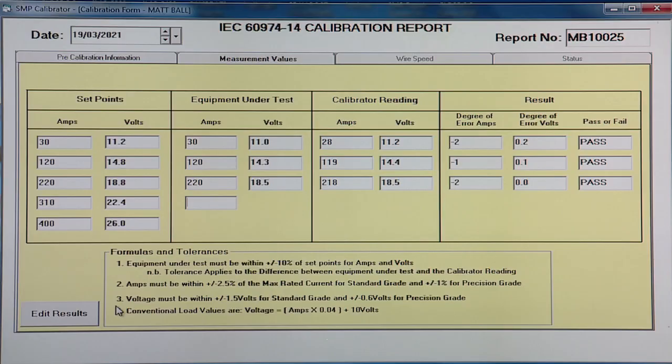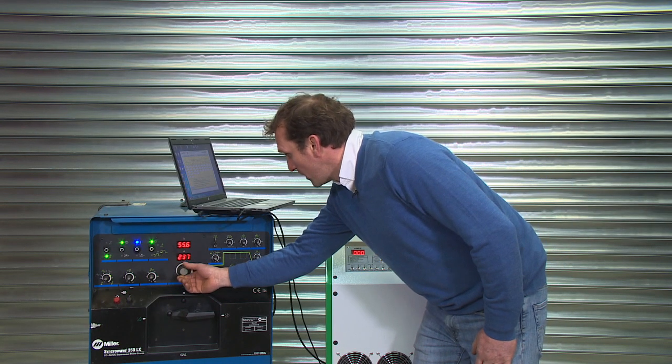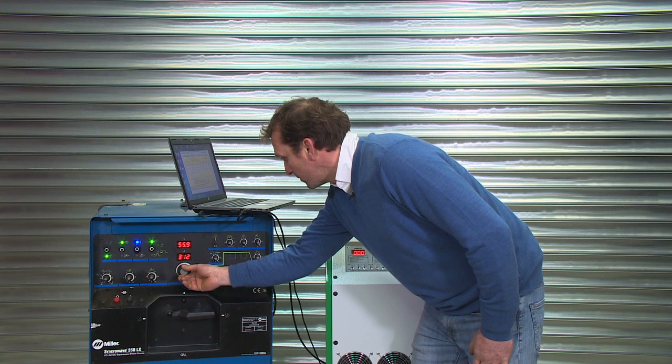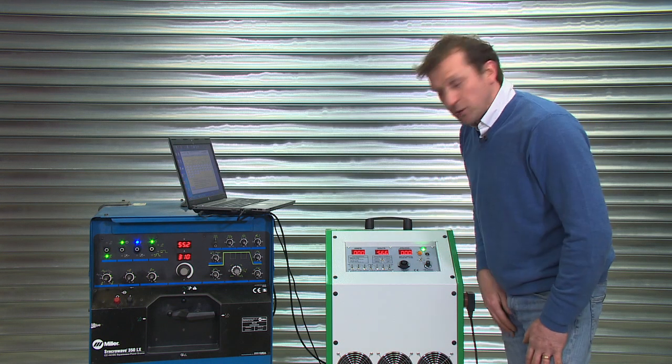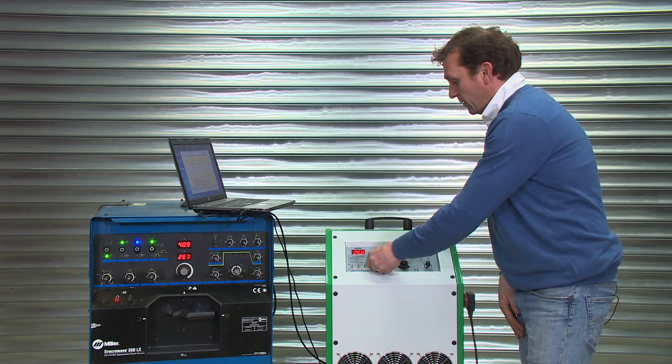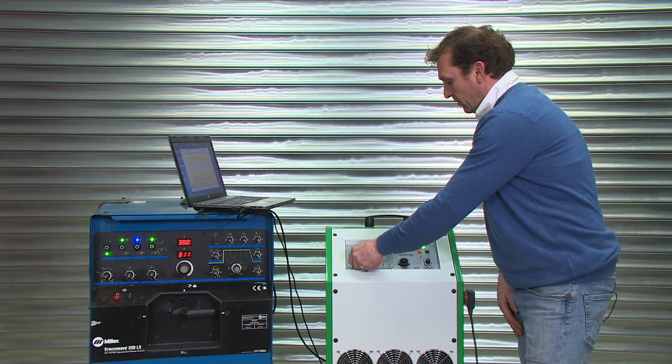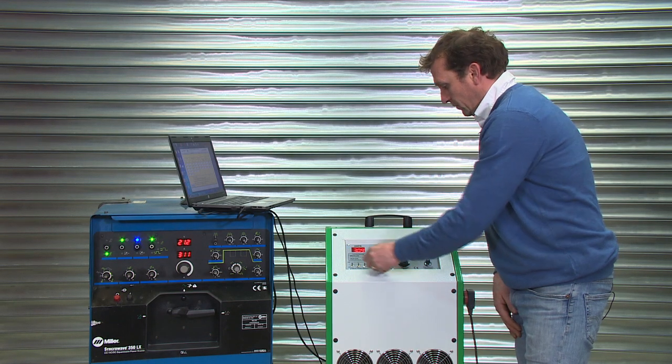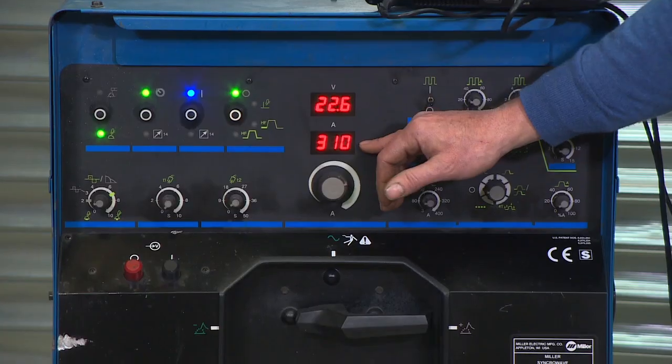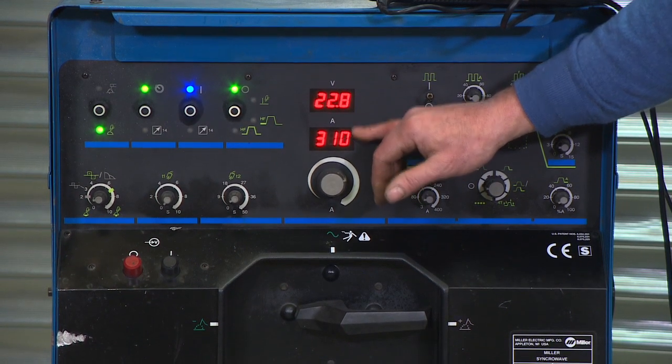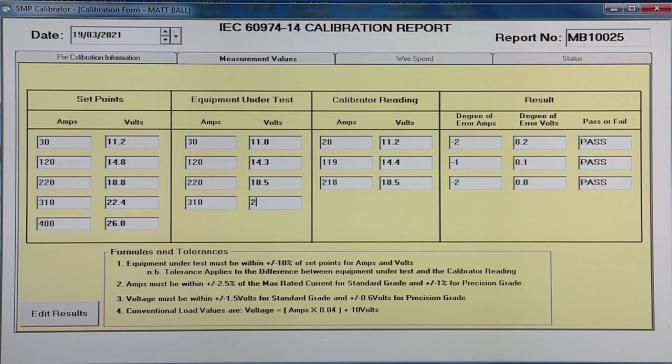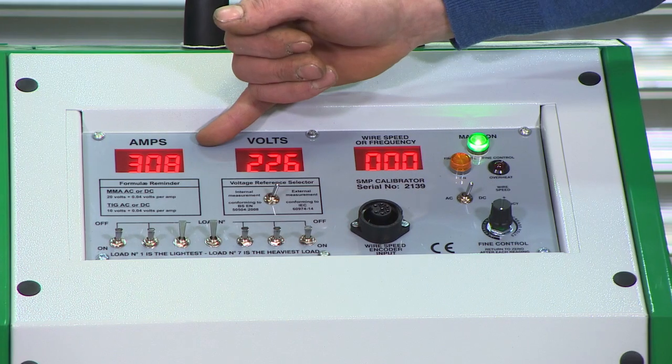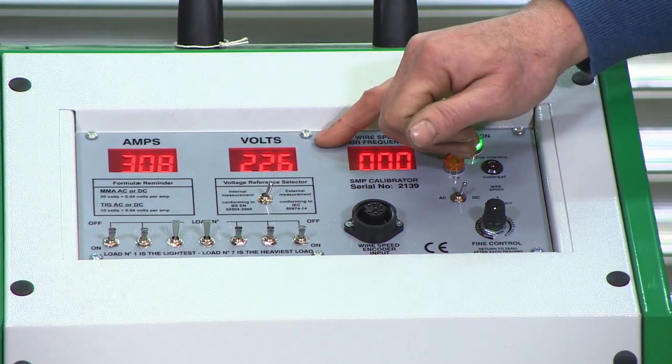And then we'll take our penultimate reading of 310 amps, 22.4. So we set the machine, the welder to 310. And load the calibrator to approximately 22.4. We'll record the welder reading of 310 amps, 22.9. And then the calibrator reading, 308, 22.6.